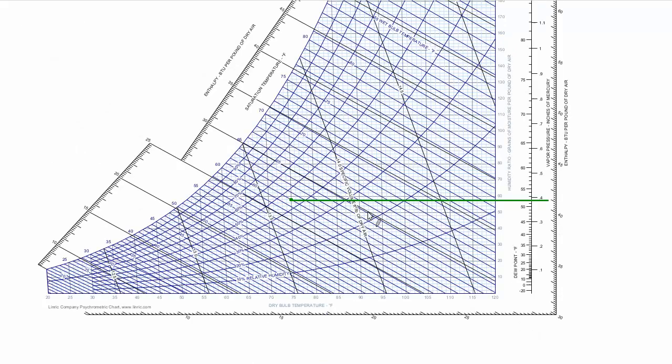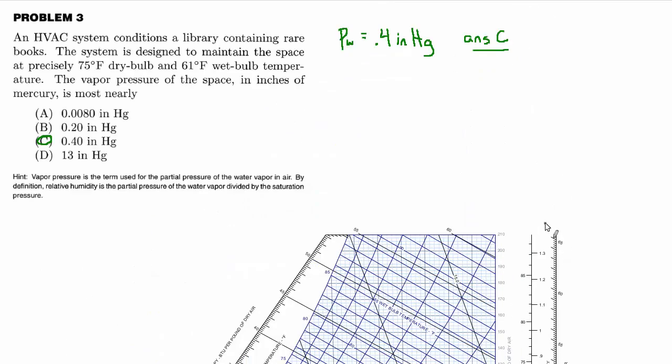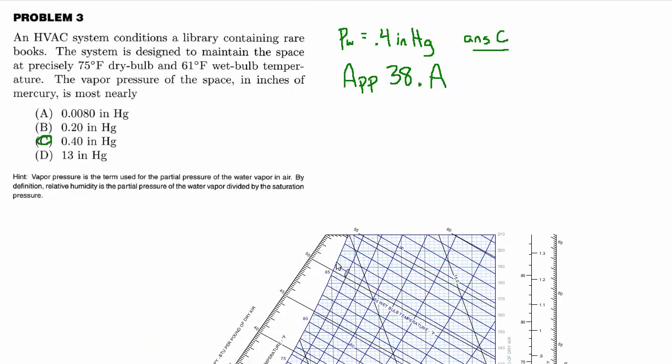Now the problem is not all psychometric charts have vapor pressure on one of the axes. For example, in the MERM, you have app 38A, which is the psychometric chart, and it does not show vapor pressure. So it's important to have another option. I got this chart from the engineering toolbox site. So you can certainly print out a few of these and stick them in your binder for the test. That's probably a good idea. But the best idea is just to have multiple ways to come at a problem.